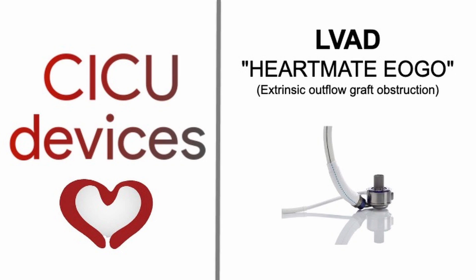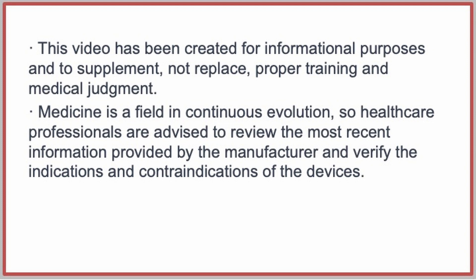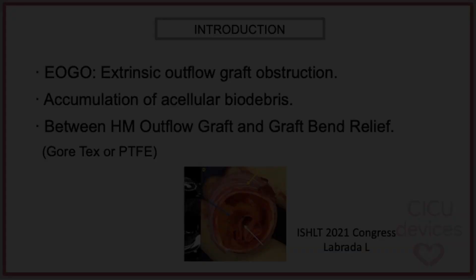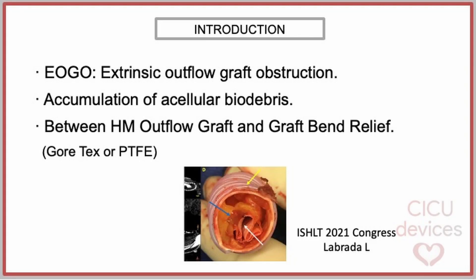Extrinsic outflow graft obstruction is triggered by the accumulation of acellular biodebris located between the Heartmate outflow graft and the outflow graft bend relief, or another component such as Gore-Tex or polytetrafluoroethylene conduit, or a RAP added by the surgeon during implantation.